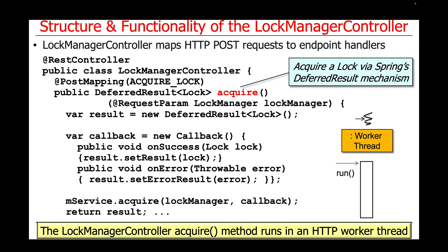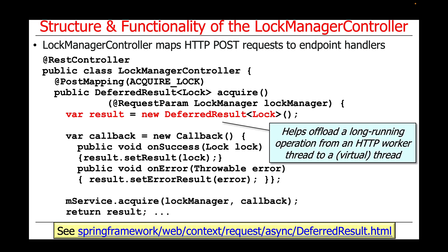What we're going to do is use a DeferredResult, as shown here, to help offload the longer-running acquire service implementation from the HTTP worker thread where the request came in, over to the microservice, and have it run in a background virtual thread. I'll show you how that works in just a bit.